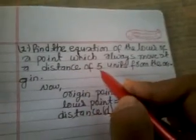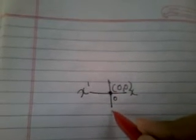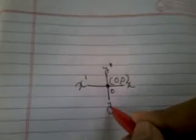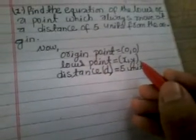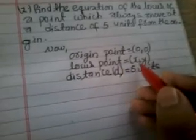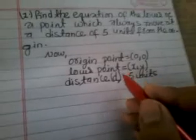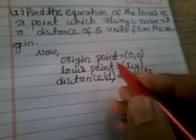Finding the solution means finding the equation of the locus — a point which always moves at a distance of five units from the origin. The origin point is zero comma zero, and the locus point is x comma y because we don't know the point. We use the standard method to find the equation of the locus, and the distance is given as five.